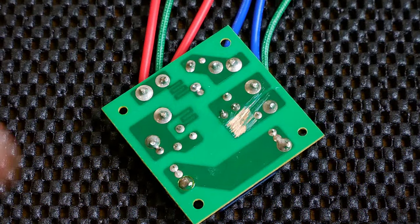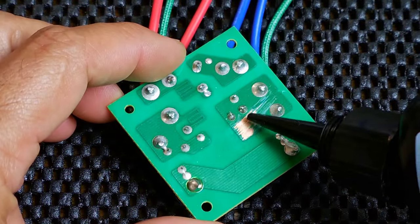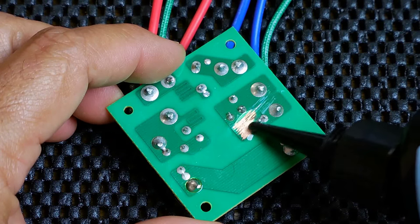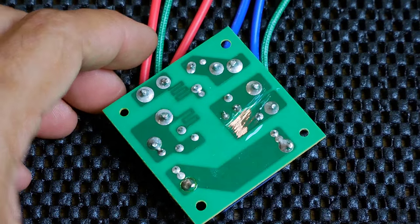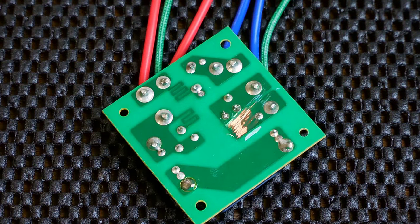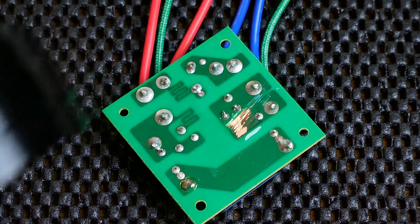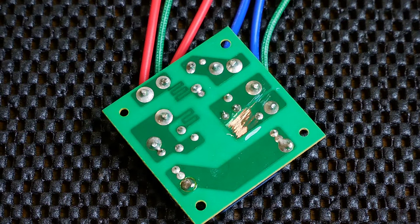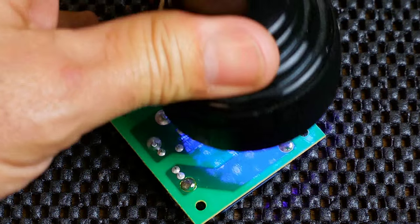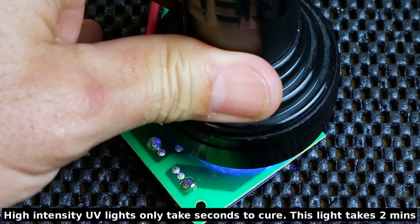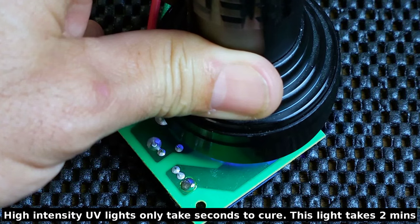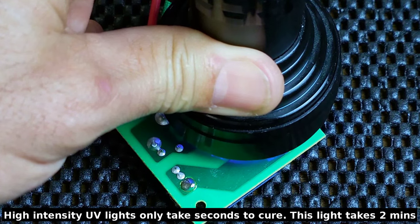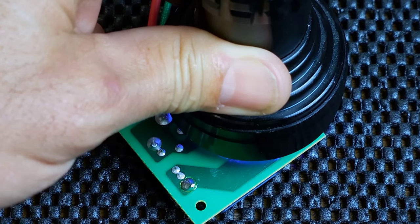Let that dry a minute. Now I can take a little bit of the adhesive, place it over the top. It doesn't take much. That's all it takes. I can now take the UV light or place it in the sun. For this, I'll just put the UV light directly over it. And after a couple of minutes, you will be good to go.